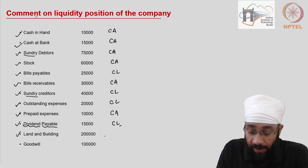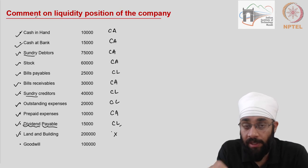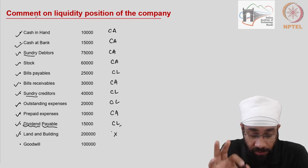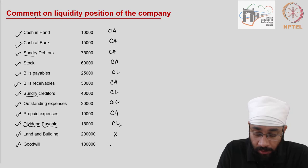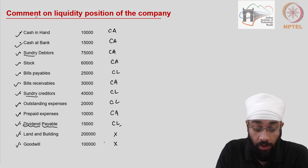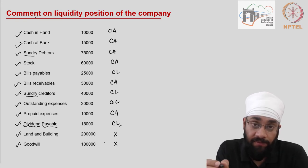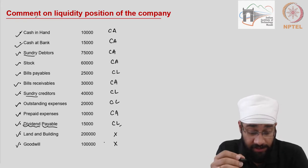Land and building is not a current asset or current liability, so we are not going to consider it here. Goodwill is also a long-term asset and will not be considered in current assets.